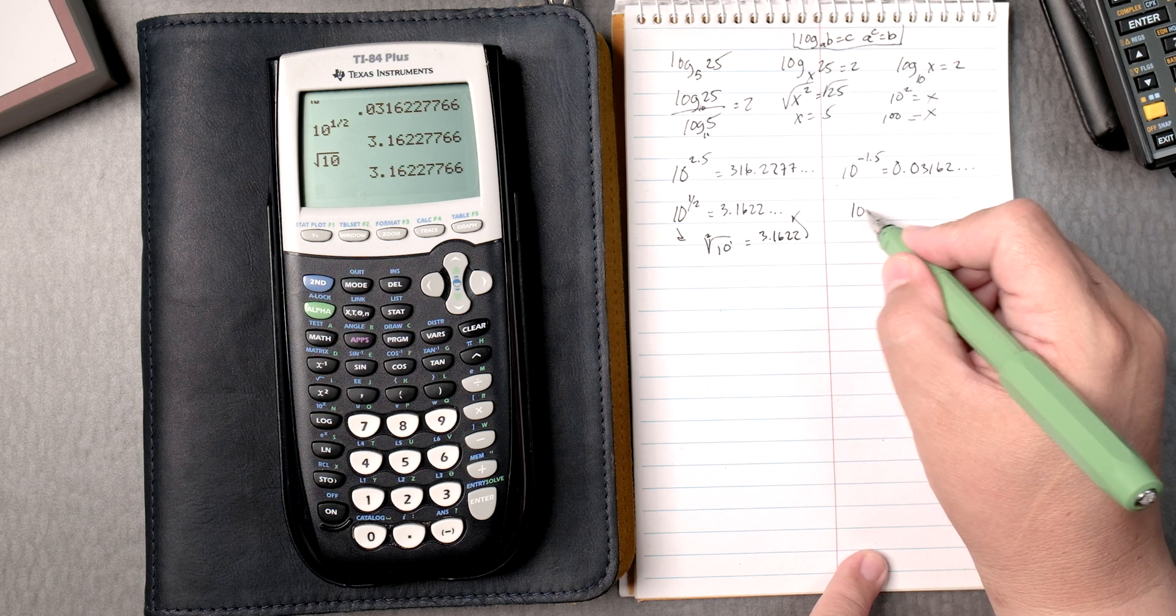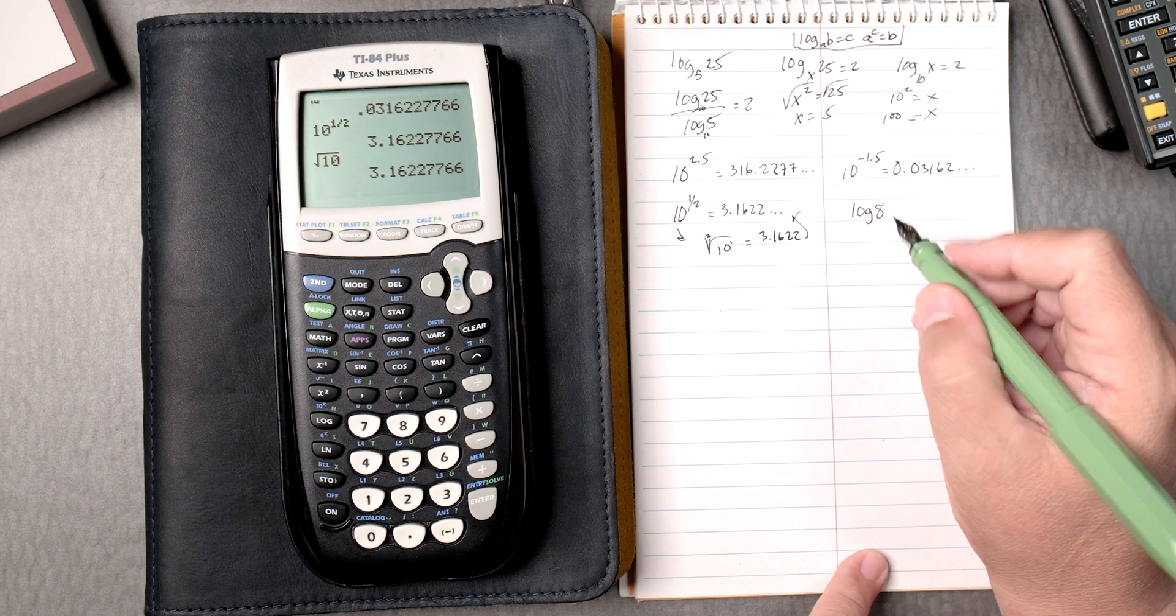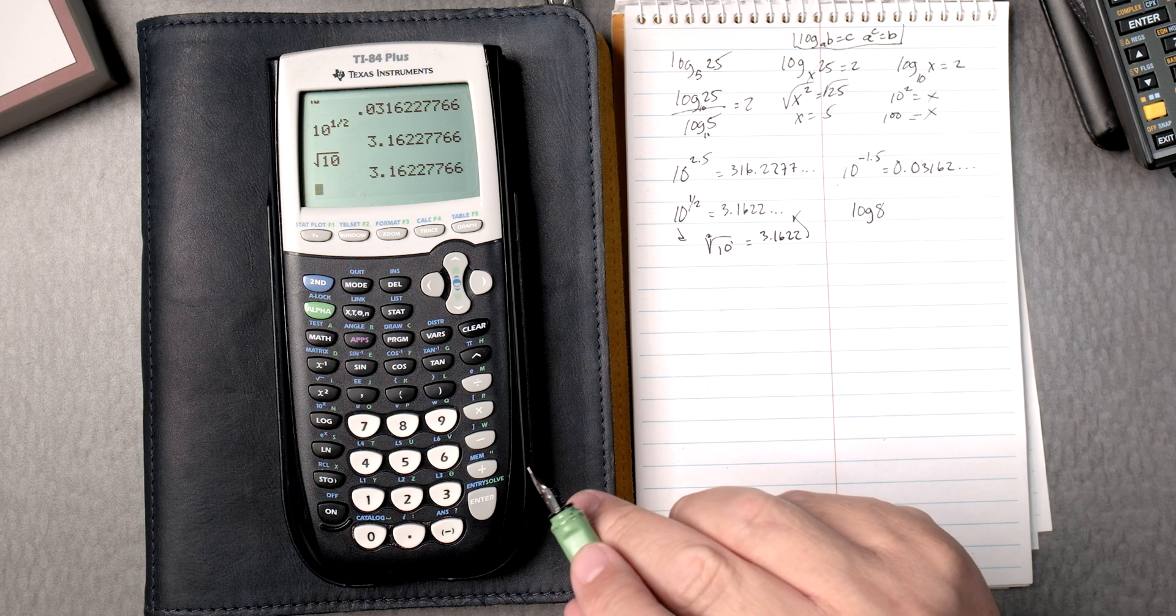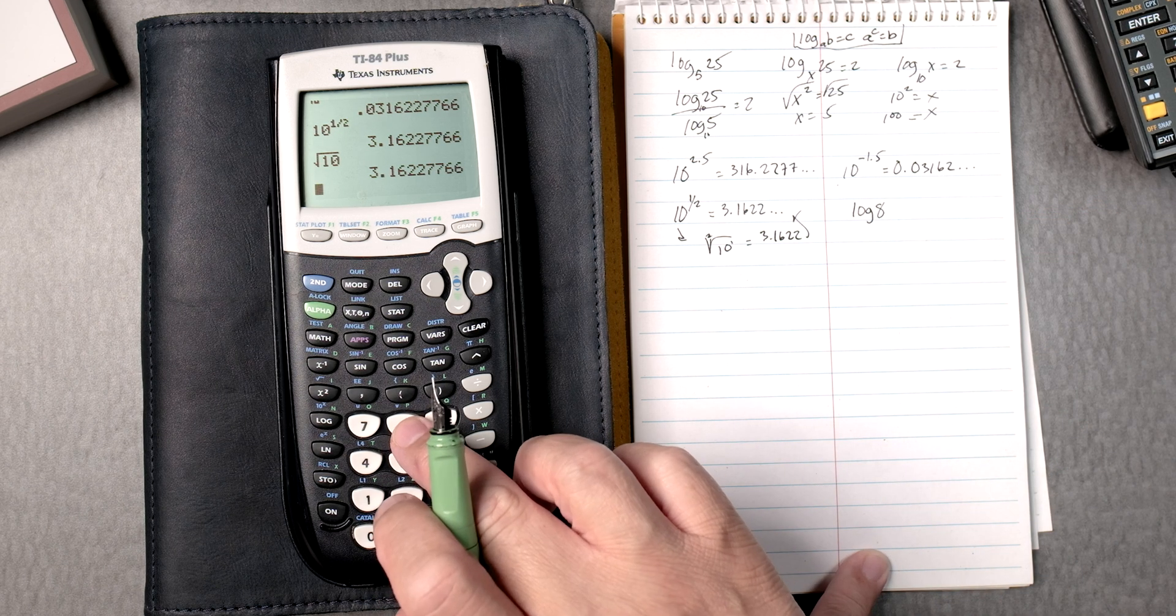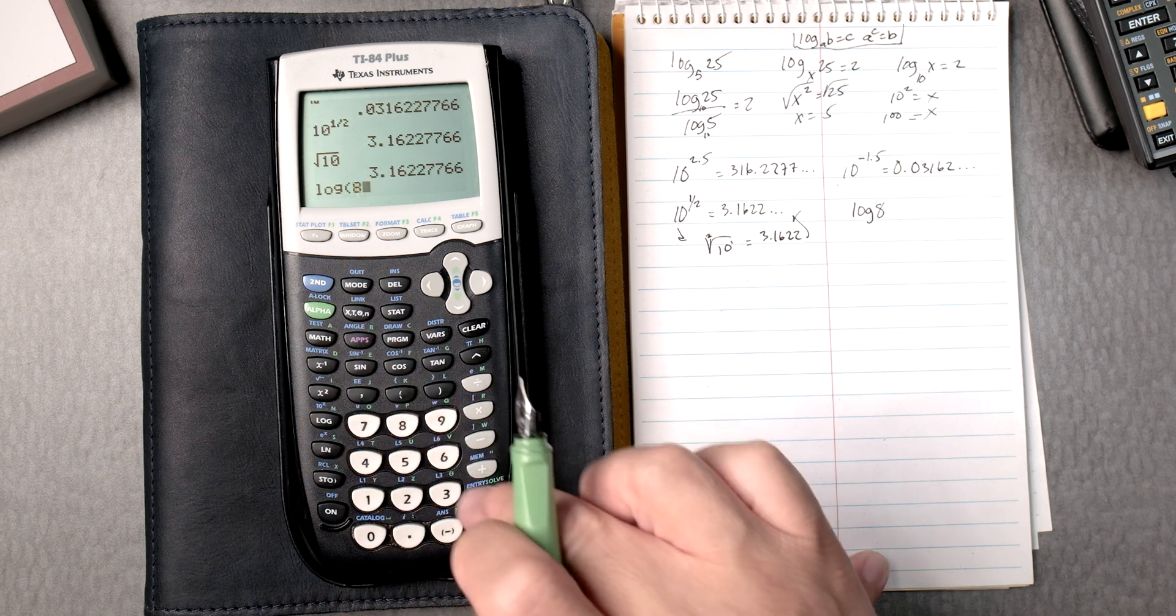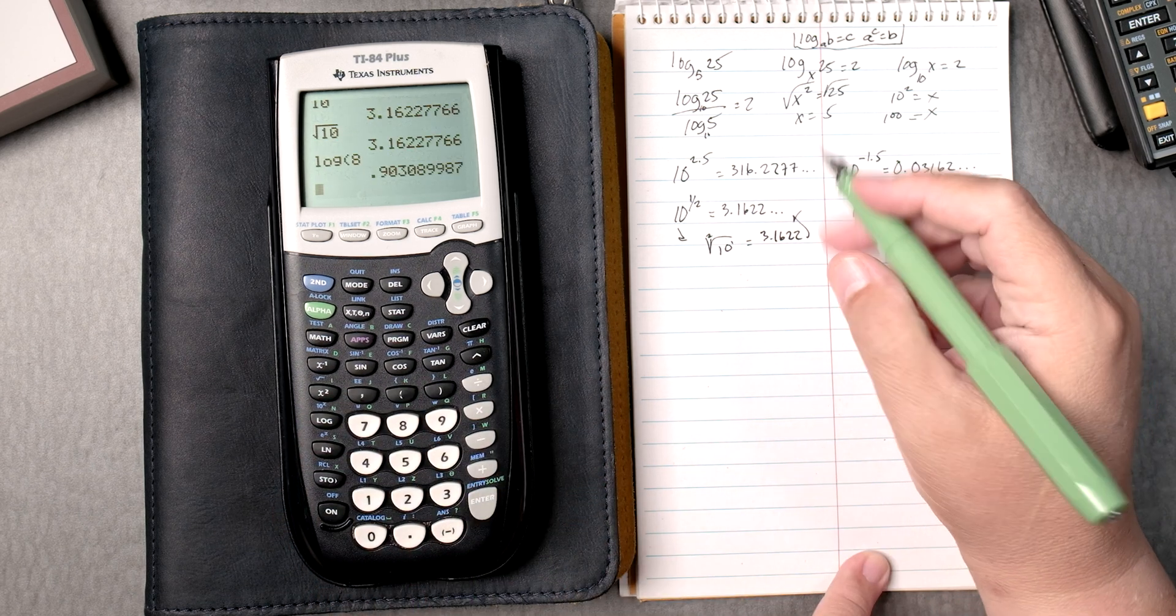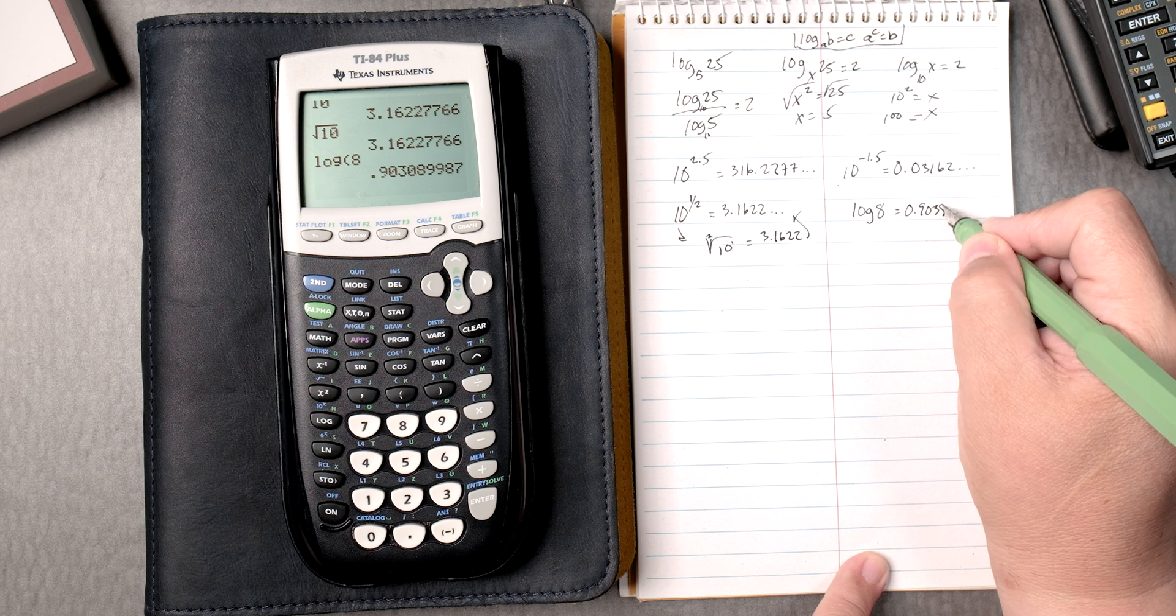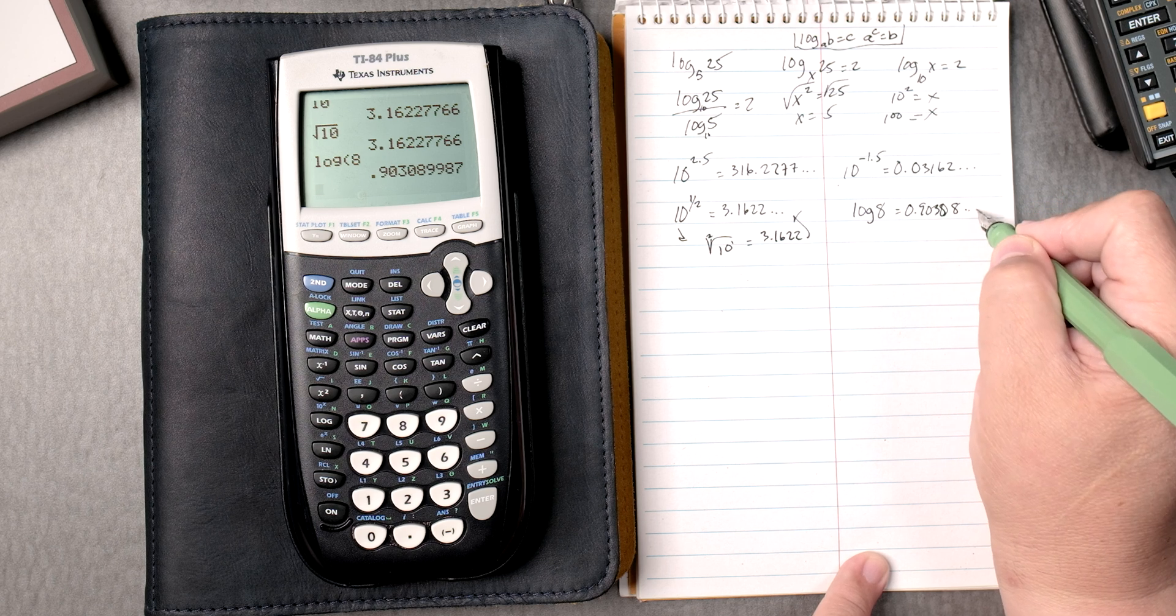So how about the log of 8? Again, when there is no base, it's automatically a 10, your calculator is base 10. So you go log 8, you can close it if you want, you don't have to, press enter, 0.90308, and it keeps going.